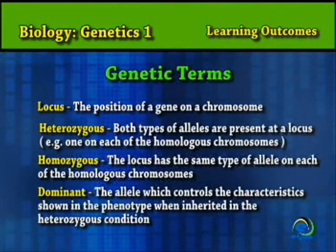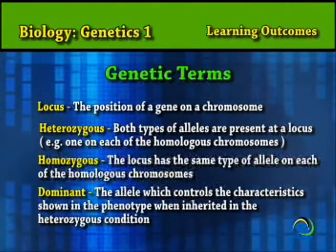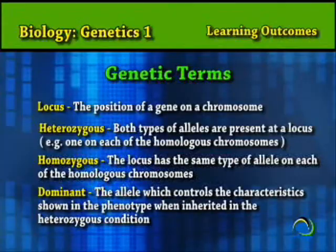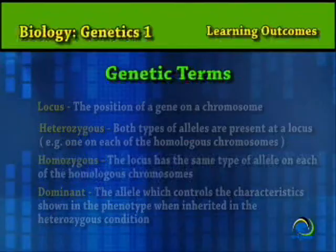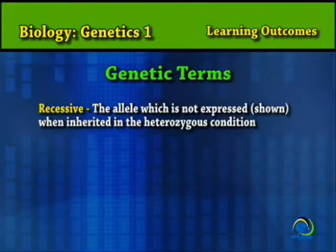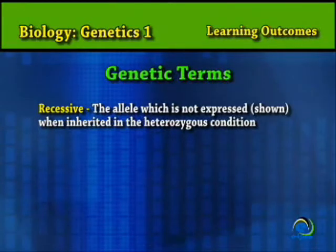Dominant — the allele which controls the characteristic shown in the phenotype when inherited in the heterozygous condition. Recessive — the allele which is not expressed when inherited in the heterozygous condition.